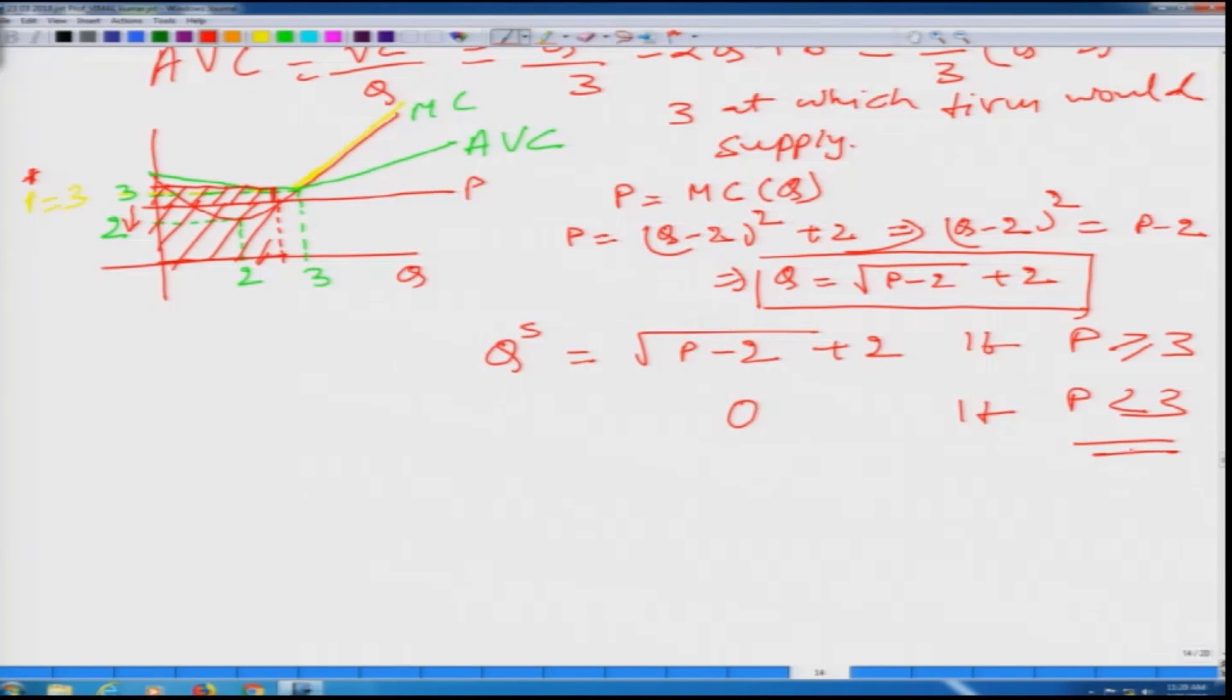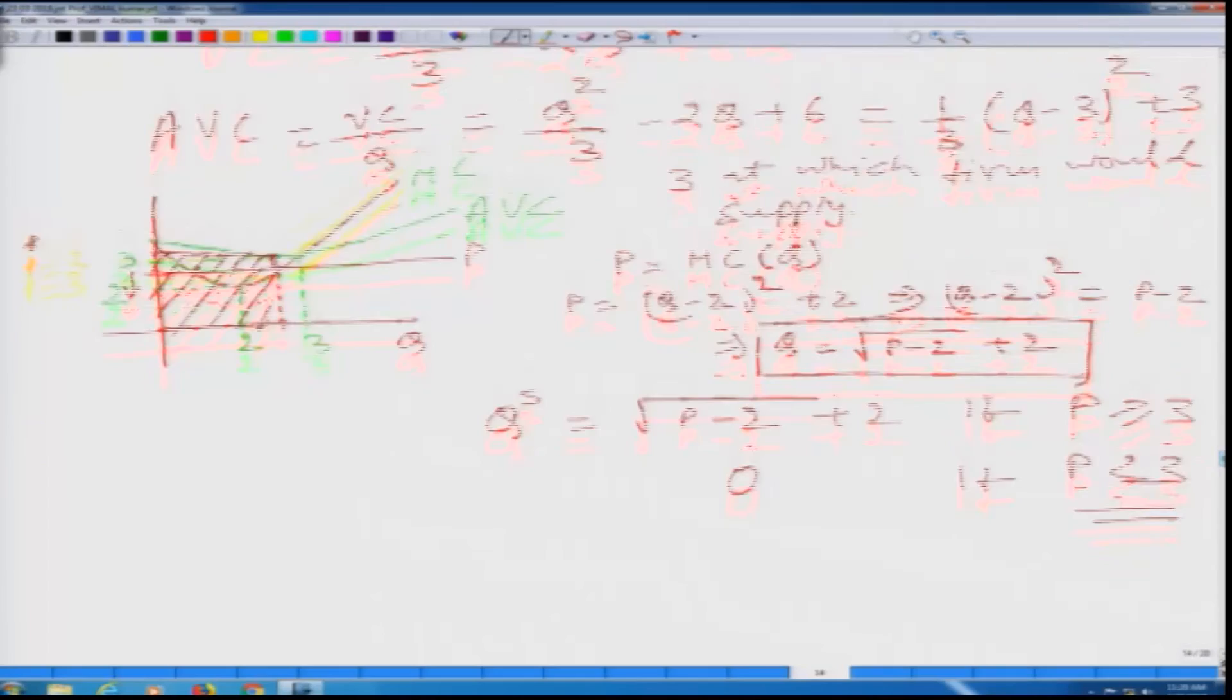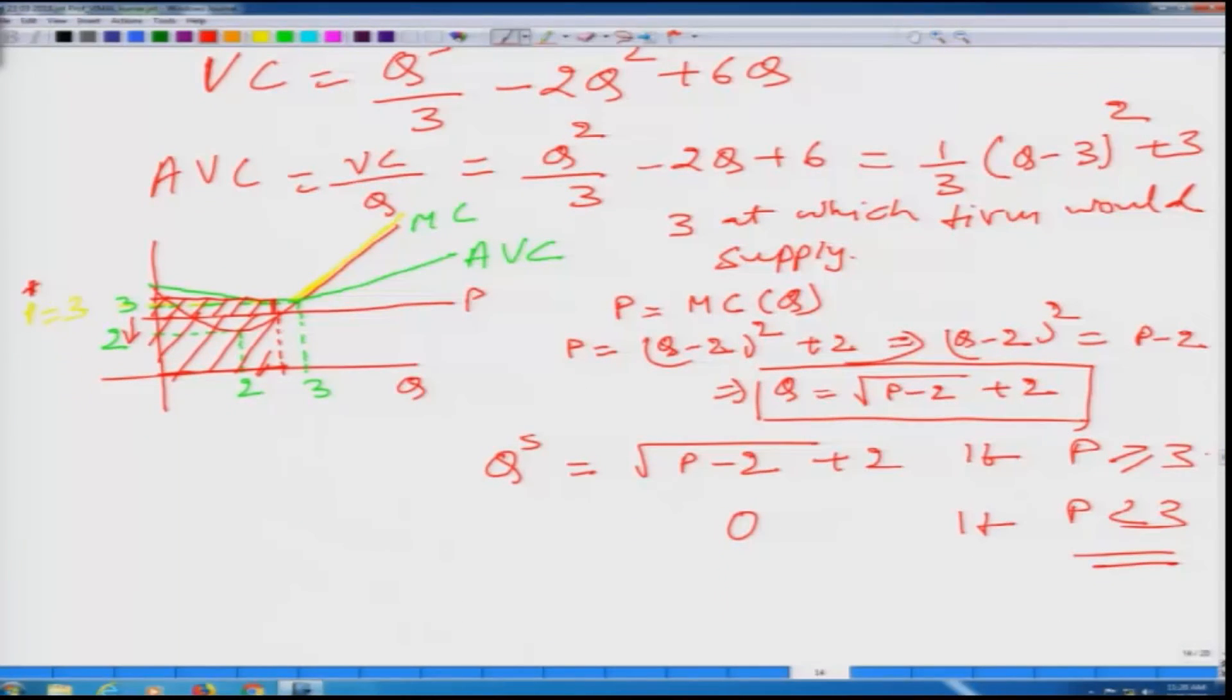So this is the example. Very clear that firm would like to shut down its operation if p is less than 3 for a simple reason that the firm is not even able to recover the variable cost. So firm would prefer to shut down the operation. Thank you.